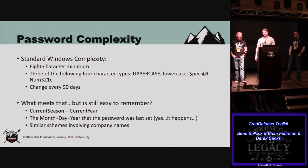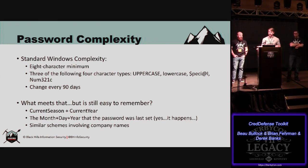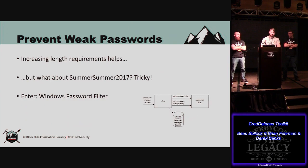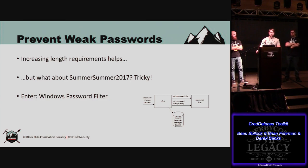Let's talk about password complexity. I'm sure most of you are familiar with standard Windows complexity — eight-character minimum, three of the four: uppercase, lowercase, special, numeric, change it every 90 days. What do we find often where this is the only policy in place? People pick current season, current year, or month/day/year the password was set. We can do things like increase the length requirements from an eight-character minimum to a 15-character minimum. When we hit environments where it's a 15-character minimum, the success we have in guessing passwords drops drastically.